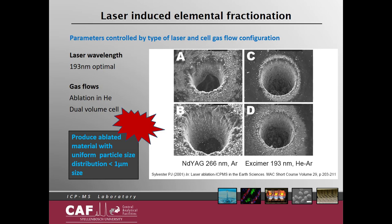When comparing ablations from two different lasers, the 266 nm laser produces badly shaped craters compared to the smooth craters of a 193 nm laser. These ablations are also in a helium-argon mixture, while the 266 nm ablations were only in an argon gas environment. The choice of laser and ablation gas is important to ensure that the ablated material has a uniform particle size distribution, ideally less than 100 microns, for easy ionization in the ICP plasma.